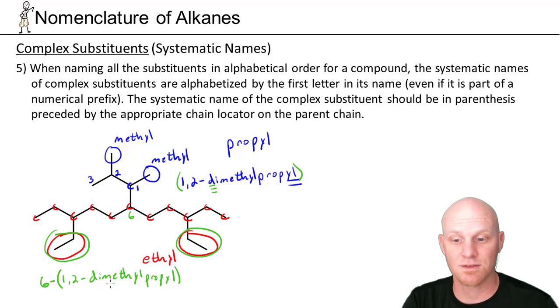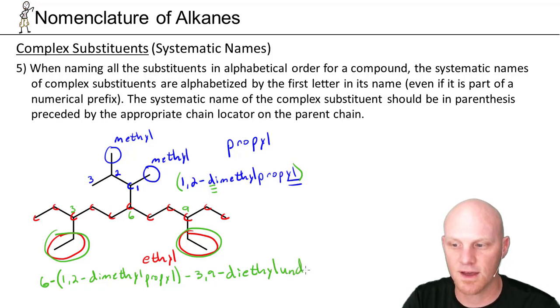Without the parentheses, we might just get confused what all these numbers actually mean. So if you also see, we've got those ethyl groups at carbon 3 and then at carbon 9. So the next thing we're going to say is dash 3 comma 9 dash diethyl. And then finally the parent chain, which is undecane. Cool. That's how you incorporate complex substituents into the overall name of the compound.